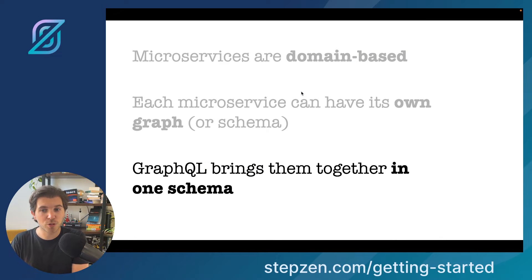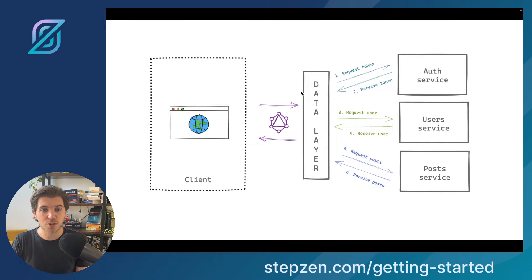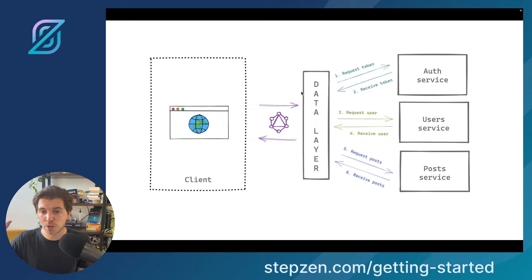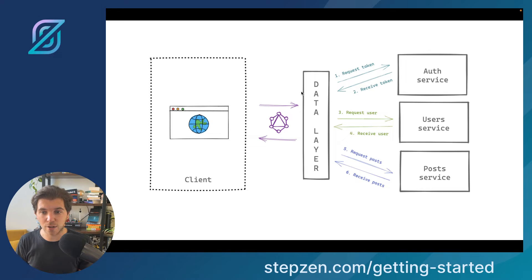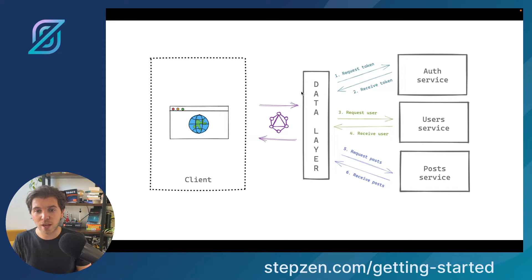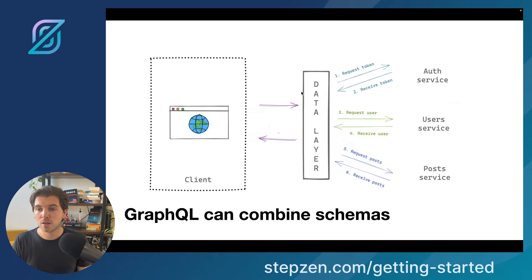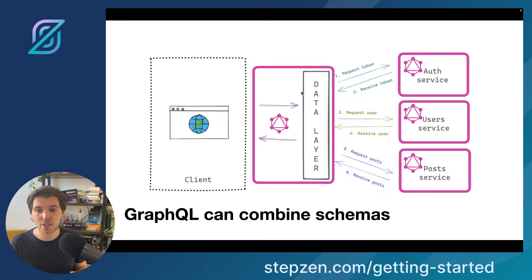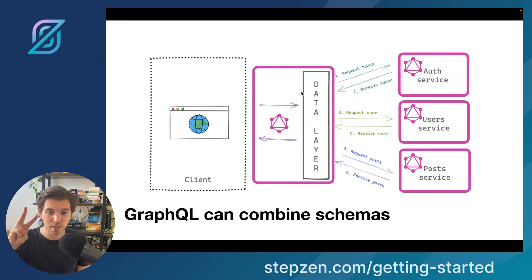With GraphQL, you can bring together graphs in one single schema. So we have an authentication service, users, and posts — three services that we want to combine in one GraphQL data layer, or a GraphQL server, or a GraphQL gateway, or a GraphQL API mesh — call it whatever you want. It is GraphQL and we're bringing data together in one single schema, combining three separate schemas into one.